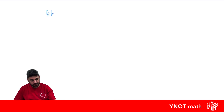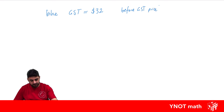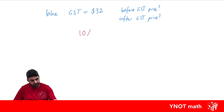If we buy a bike and we know the GST of the bike is $32, what's the price of the bike before GST is added and after GST is added? We know GST is 10%, so the $32 is the 10%. The best way to do this is to break it down into 1% first.